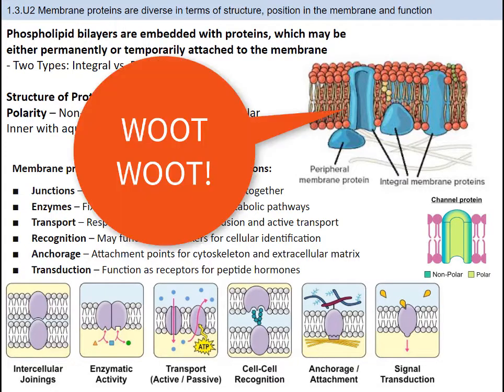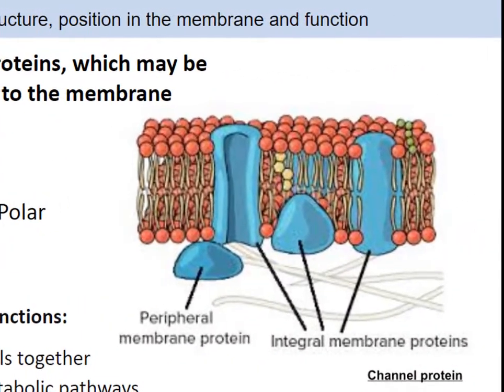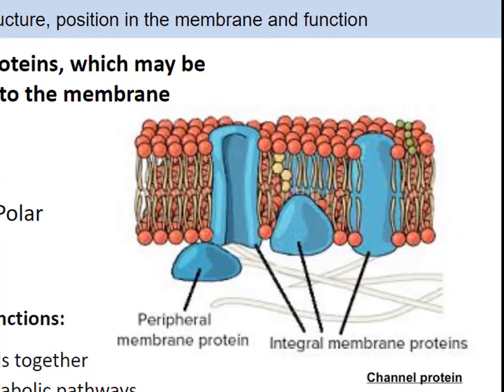Even though the phospholipid bilayer is a huge chunk of the cell membrane, it is not all. Additionally, there are proteins that are involved here too. The primary role of the cell membrane is to be semi-permeable and to control the movement of substances into and out of the cell. Proteins help this out immensely. We have two different types of proteins: integral and peripheral.